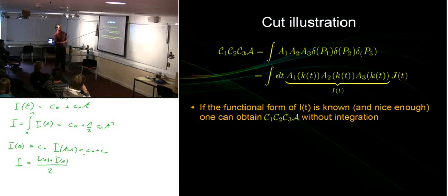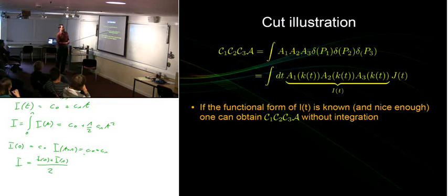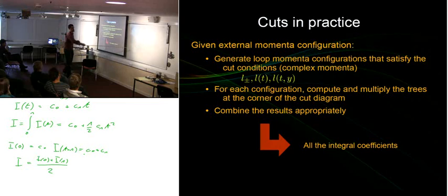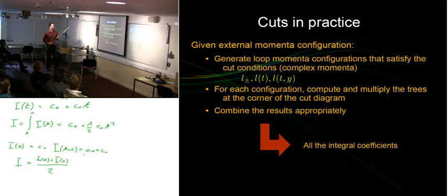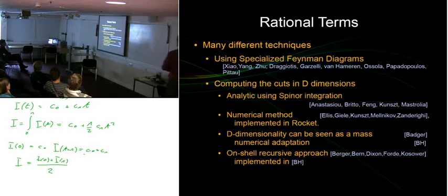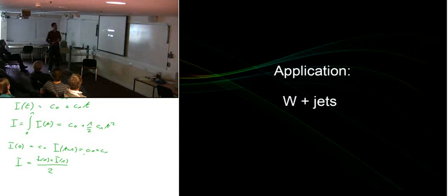To compute the cut part: given an external momentum configuration, I generate carefully chosen loop momenta that, sampled the right way, give me the coefficient of the integral I'm looking for. That's only half the problem — I still need to get the rational part, for which there are two different techniques. That's quite technical, so I'll skip to the application to W plus jets.